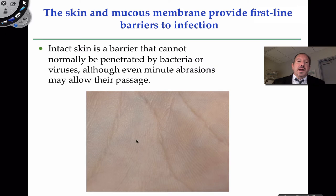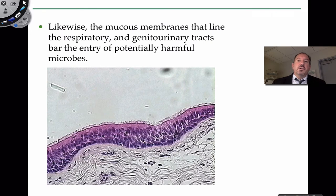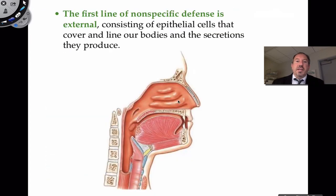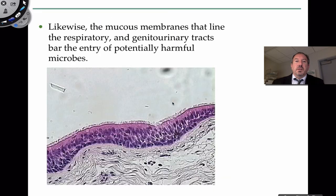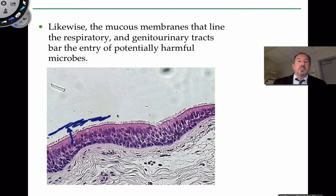Usually bacteria can't penetrate the skin — there are many layers of stratified squamous epithelium, and unless there's some kind of abrasion or penetration, microorganisms cannot permeate through the skin. In the nasal cavity, we see the mucosal layer with a lot of mucus. There are specific cells called goblet cells that secrete that mucus. We also have proteins on the outside of cells called cilia that help to capture pathogens.